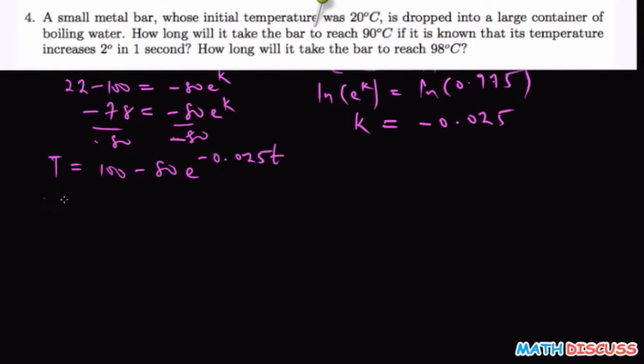So when T equals 90 degrees, we have 90 = 100 minus 80 e to the power negative 0.025t. So collect like terms: this one comes here, you have negative 10